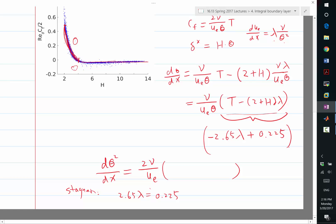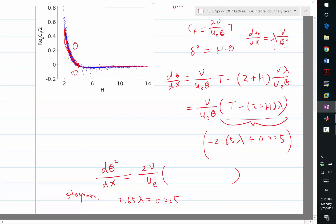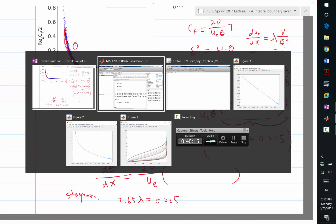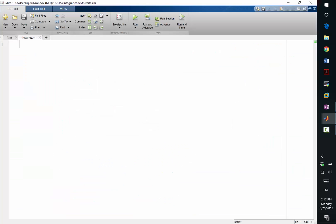That gives us a particular lambda, and this particular lambda combined with whatever d ue dx we know at the stagnation point is going to give me an initial theta squared to start my solution. From that initial condition, then I can solve this equation forward. Not sure if I have time to do this lecture, but at least let's get the initial condition sorted out.